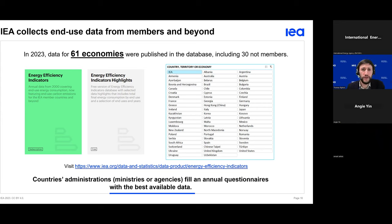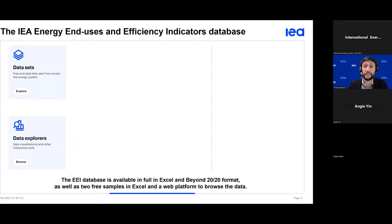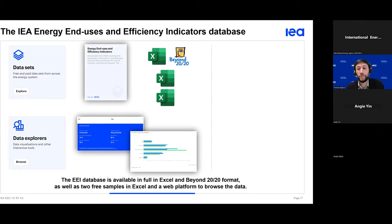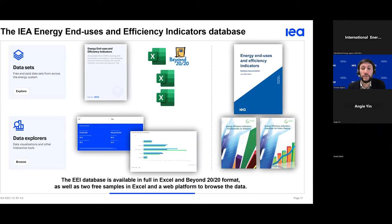Coming back to the database: from all these collected data the IEA energy data center compiles a large database available on our webpage. The main publication in Excel provides all data as well as interactive graphs and visualization tools. This full database is also available in IVT format, and we provide two samples — the highlights and the demo and availability files in Excel. Another way to browse our data is the data explorer with a web interface, and we maintain documentation with methodology and detailed contents as well as two manuals on statistics and policy making.